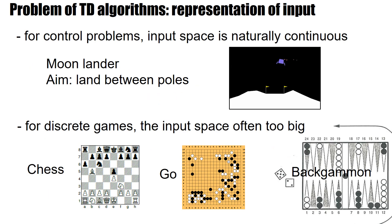Let's make two remarks. The first is that in many physical problems, the input space is naturally continuous — for example, in a video game where you want to land a moon lander on the moon between the flagpoles. The second is that even where actions are discrete and the state space is discrete, the state space can be so large that it's practically impossible to build a table of all states or state-action pairs.